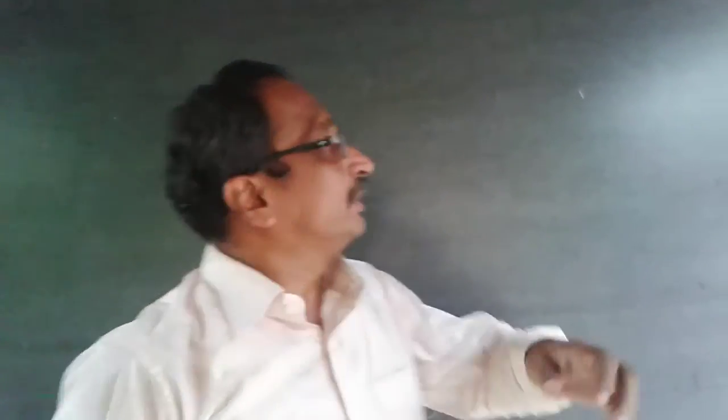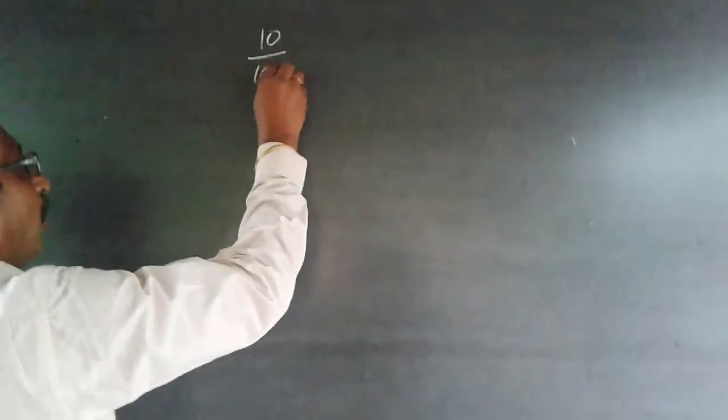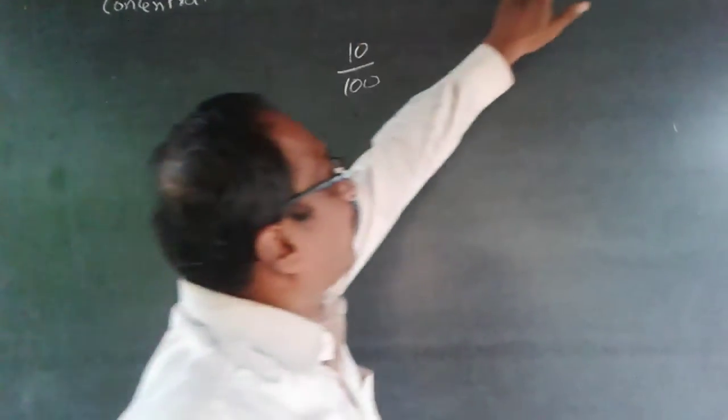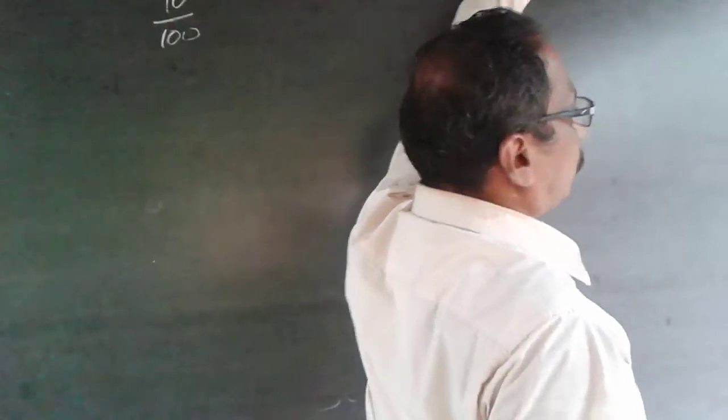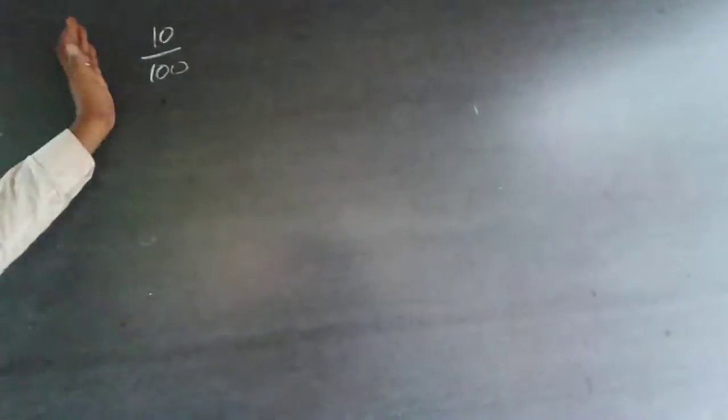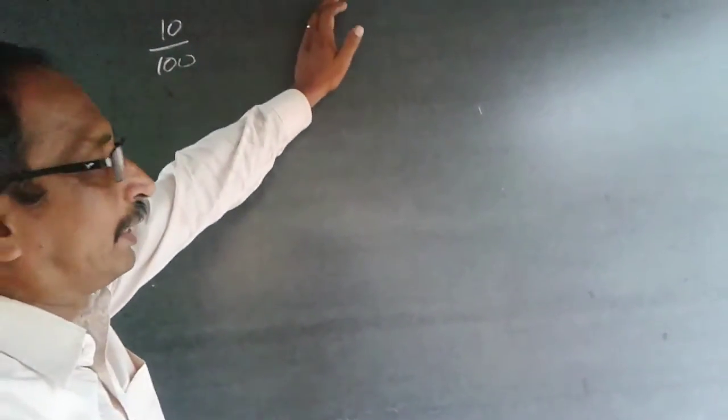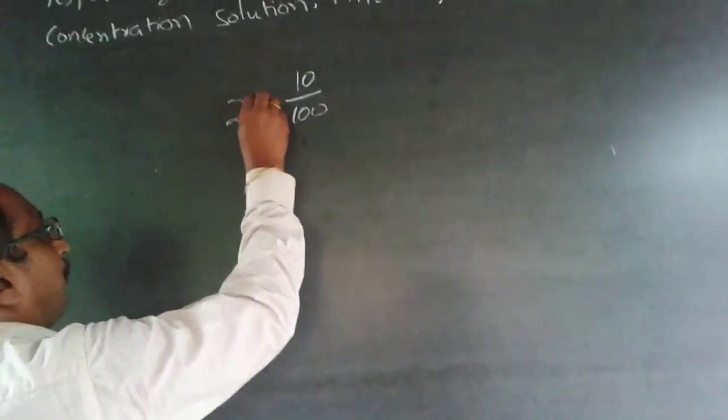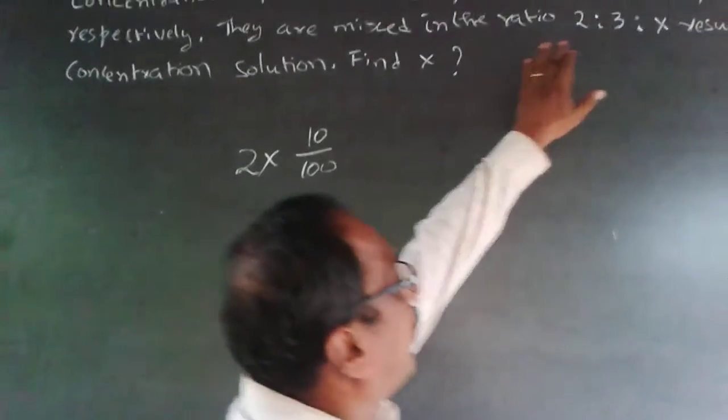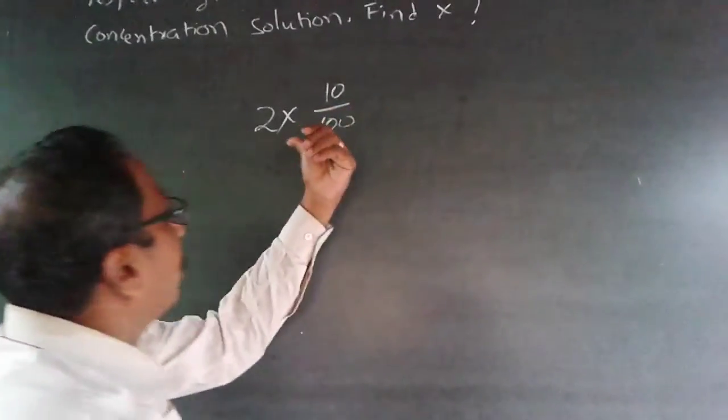Now what happens is this 10% solution—10% is 10/100. Be very careful here. They are taking two parts from this 10% solution, so you'll have 2×10/100. Don't just add 10/100 plus 20%, so it's 2×10/100.